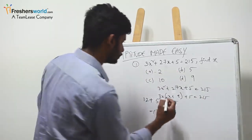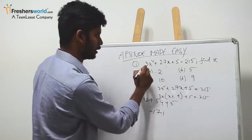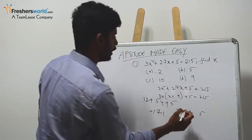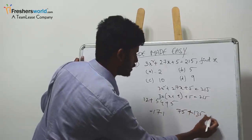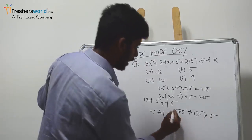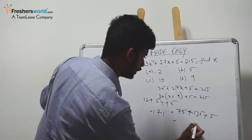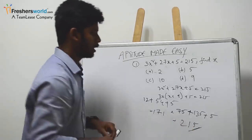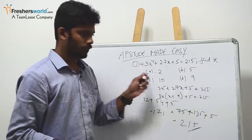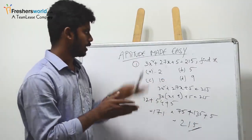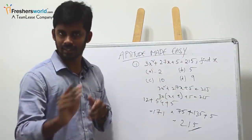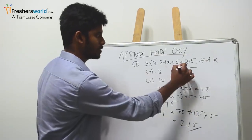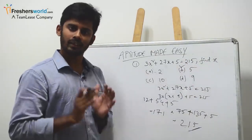Now try x equals 5: 5 squared is 25, 3 times 25 is 75. 5 times 27 is 135. Add 75 plus 135 plus 5 — that's 215. So LHS equals RHS, and the answer is 215. This is the elimination trick: if you keep the answer options in place of x and LHS equals RHS, that option is correct. The answer is option B.